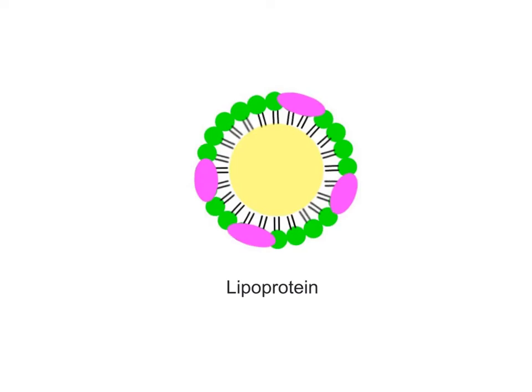One exception are the lipoproteins, which consist of hydrophobic lipids, shown in yellow, surrounded by an outer layer of hydrophilic proteins, shown in purple. These form complexes that help make lipids more soluble in blood and easier to transport.